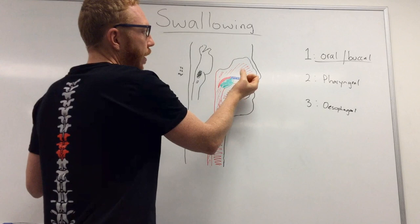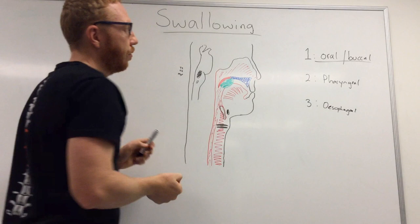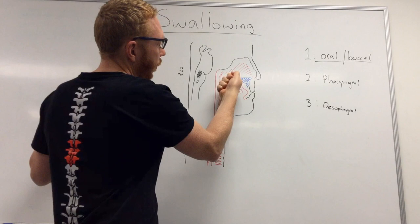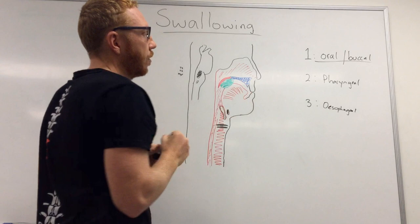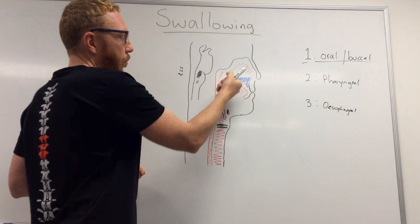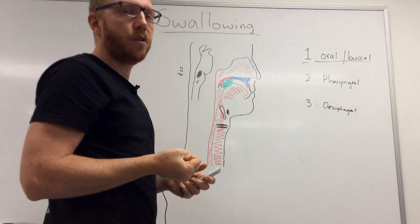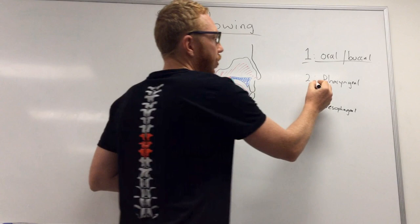Once the bolus has been broken up, formed, and lubricated, it is pushed to the back of the pharynx predominantly by the tongue — posteriorly and superiorly — until it starts to hit the back wall of the pharynx. That is essentially the end of the first phase, because as soon as the bolus impinges on the back wall, it activates certain afferent nerve fibers which initiate the pharyngeal phase.